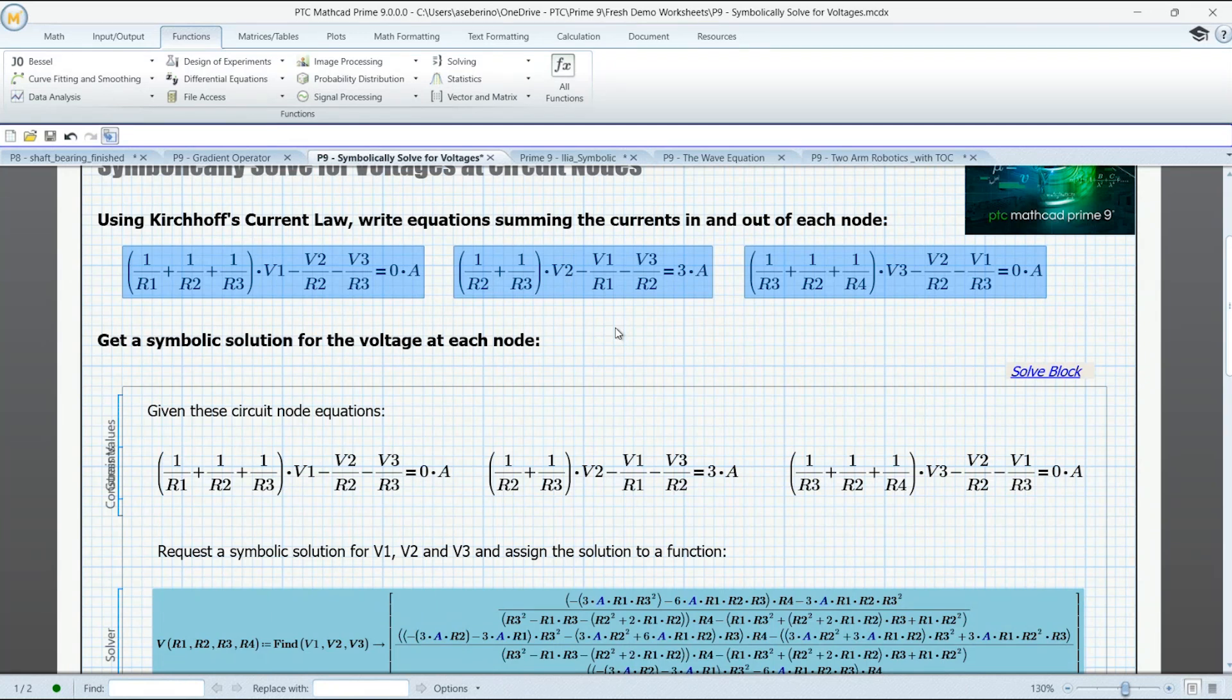So we have three resistors, three voltages entering and leaving the nodes and current, right? So we're summing the currents and it has to be equal on both sides. So we're going to ask for a symbolic solution for the voltages entering and leaving the nodes.